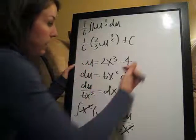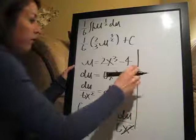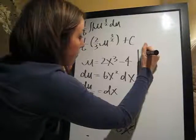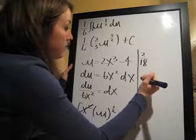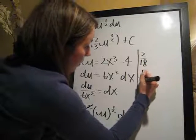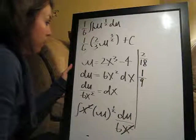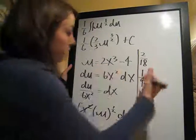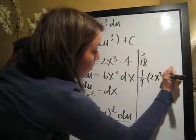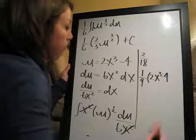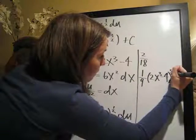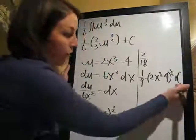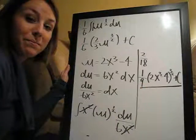So now all we have to do is plug back in for u and simplify. So I'm going to go ahead and, so we don't get confused here, I'll have to write kind of small, but multiply these two. So we've got 2 over 18, it's looking like. 2 over 18, which I'm just going to go ahead and simplify that right now to 1 ninth. 1 ninth times, plug back in for u, 2x to the third minus 4, and then to the three halves, and that's everything, plus c. And sorry for being squished, but that's our answer right there.